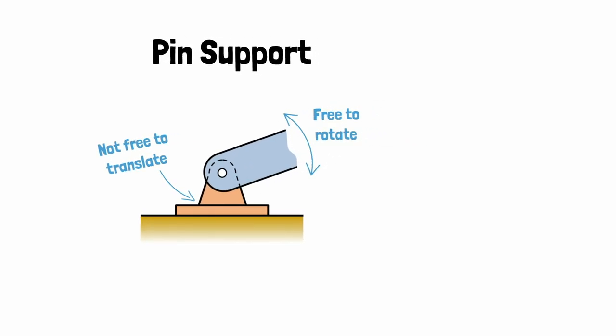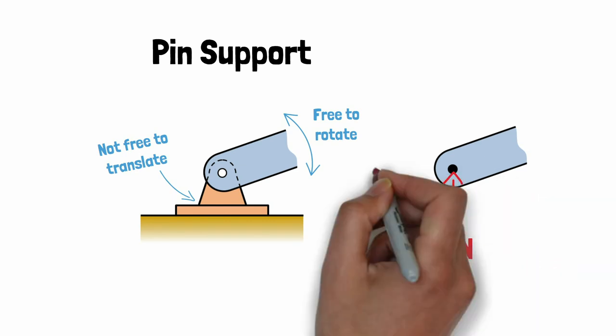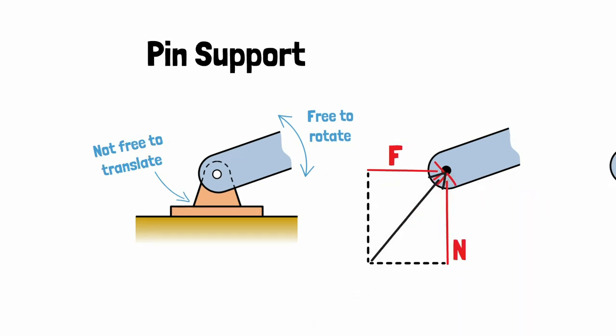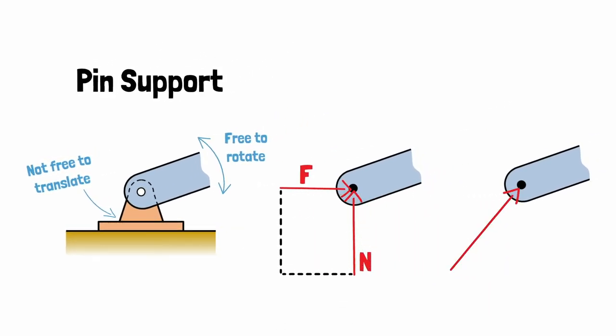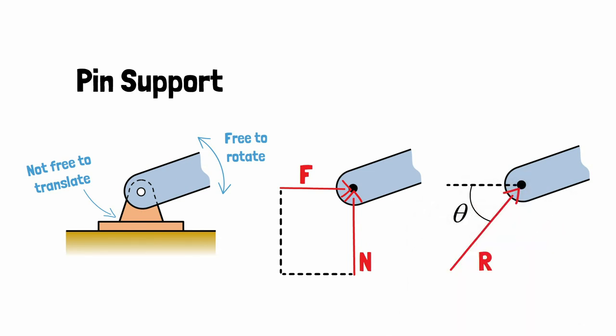Thus, in addition to the normal force we had before, we also need to include a reaction force parallel to its base. Alternatively, you can also view this as a single resultant reaction force acting at an angle theta. No moments are generated at the pin connection as the pin permits the body to rotate, as it is in fact a hinge.